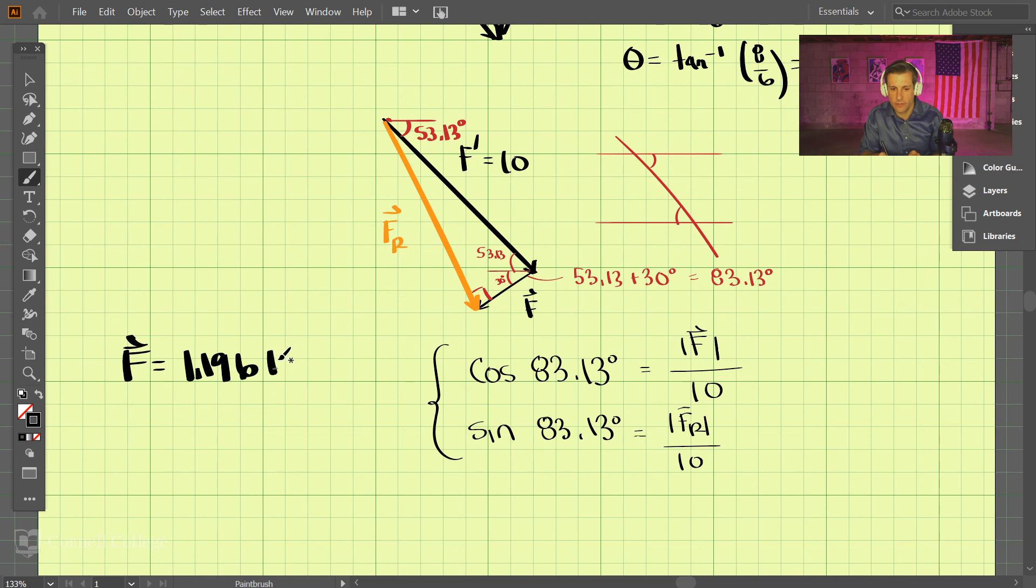And FR, the resultant vector which is at a minimum, comes out to be 9.928 kilonewtons. And that is the solution for problem 2-28.